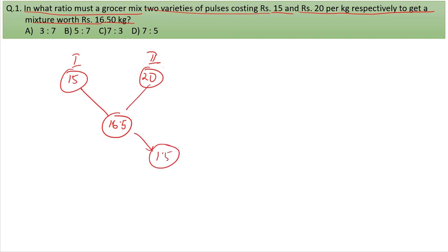20 minus 16.5 equals 3.5 kg. 16.5 minus 15 equals 1.5 kg. So the ratio is 1.5 to 3.5, which simplifies to 3 to 7 or 7 to 3 kg.